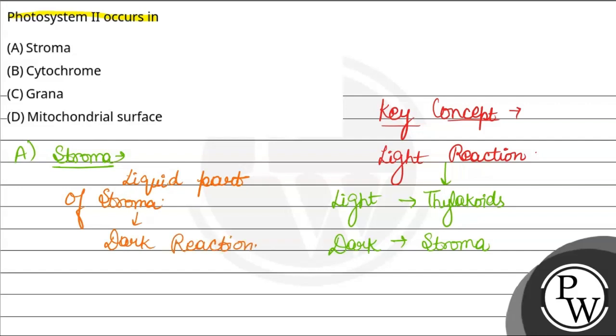और light reaction में क्या होता है? Light reaction में दो photosystems आते हैं, that is PS1 and PS2.